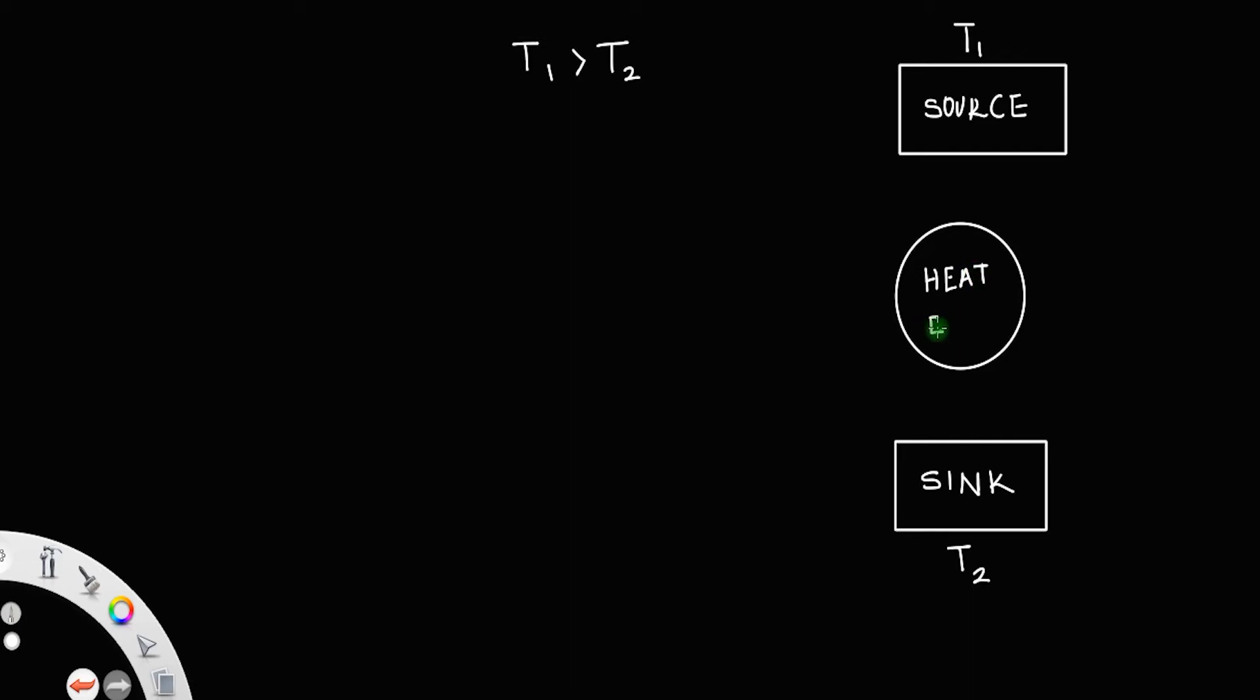Heat engine. What this heat engine basically does is, it absorbs some heat from the source, let us say it absorbs an amount of Q1 heat from the source, and then it does some work W, that is work, and the rest of the heat it rejects to the sink Q2.